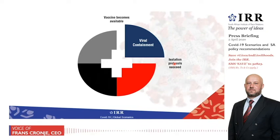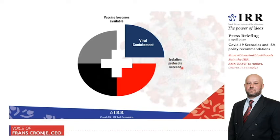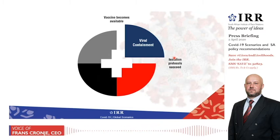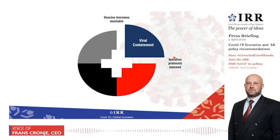The top right quadrant gives rise to a scenario that we call Viral Containment. In this scenario, isolation protocols are likely to succeed in blunting the curve. As a result of that, the humanitarian health emergency will be avoided to some extent, given that healthcare facilities will have time to prepare and a relatively low flow of critically ill patients to care for. They'll save many lives, and the worst of the mortality figures will not materialize.